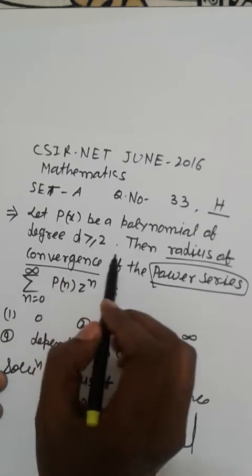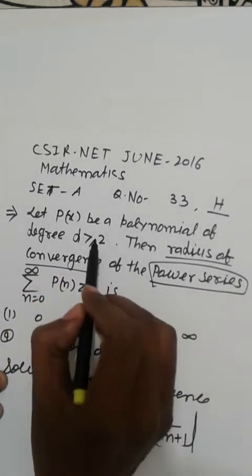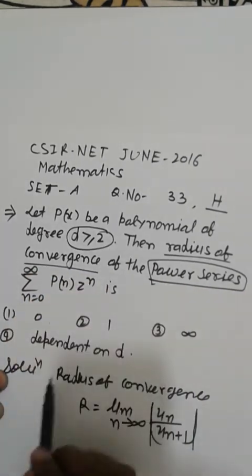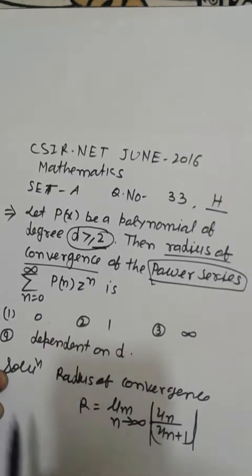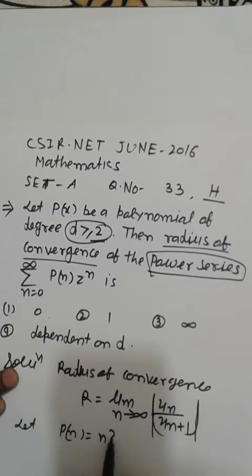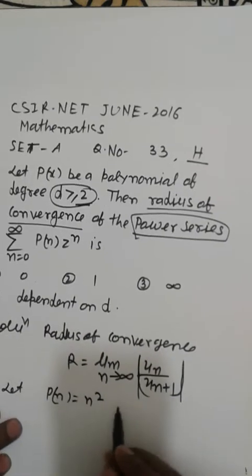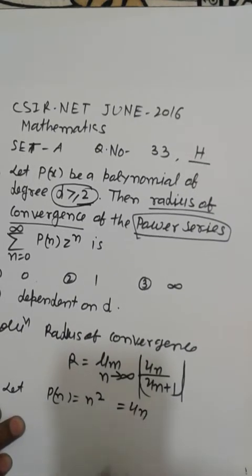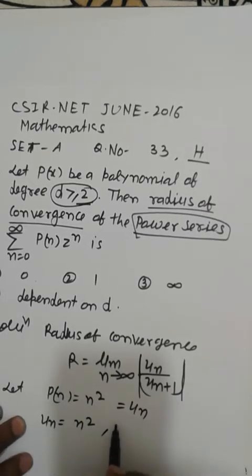The question states P(n) is a polynomial of degree greater than or equal to 2. Suppose P(n) equals n². Let's consider P(n) = n² as our Un. So now Un equals n².